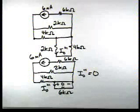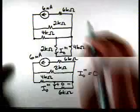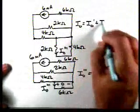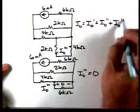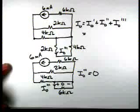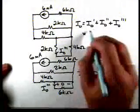So I0 is I0 prime plus I0 double prime plus I0 triple prime, and we have I0 prime was four-thirds of a milliamp.